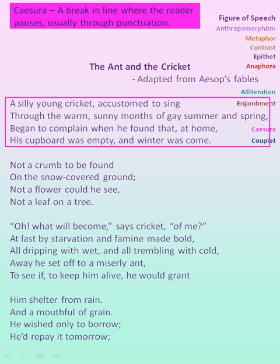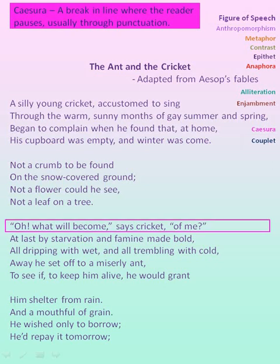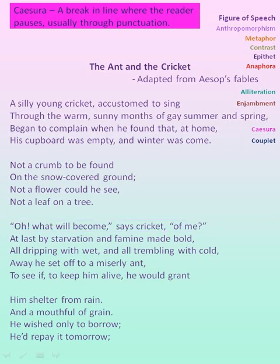After that there is a comma, after empty there is a comma — so all these four lines use caesura. Let me remind you: caesura is a break in a line where the reader pauses, usually through punctuation, and it is in between the line. So in the third stanza's first line also, 'oh what will become' — then there is a comma and the closure of inverted quotes.